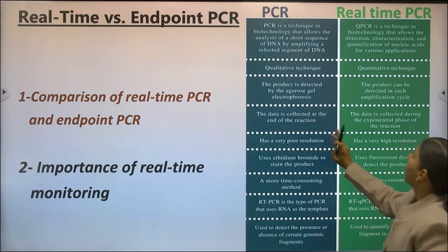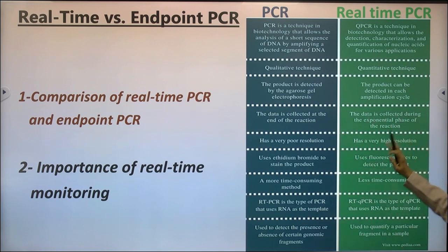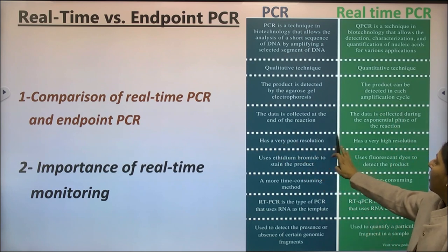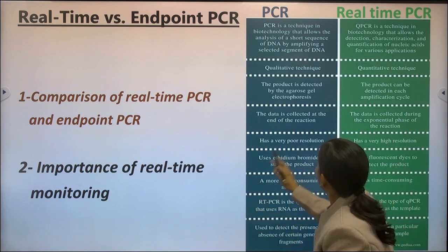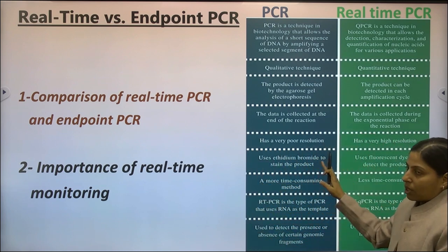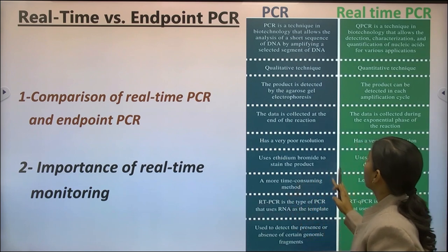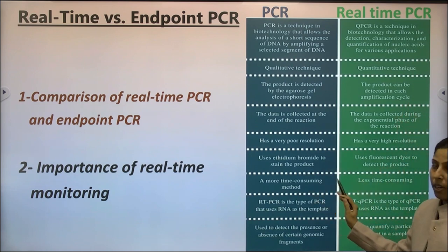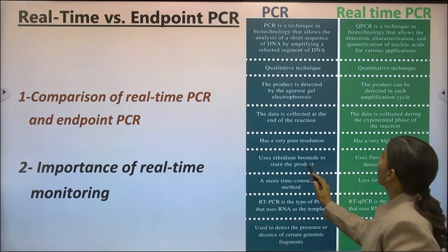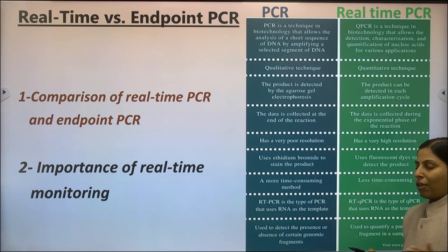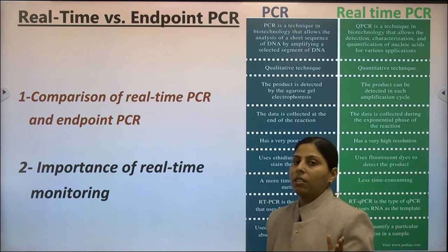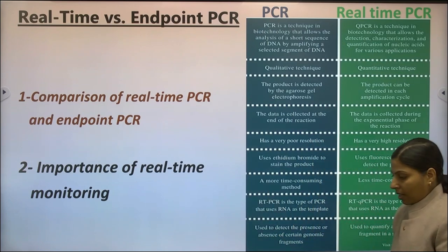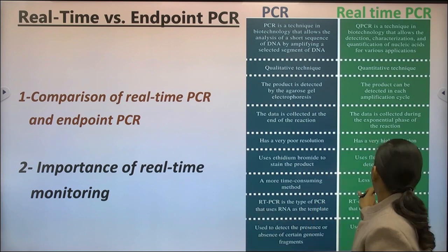In conventional PCR, data is collected at the end of the reaction, whereas in real-time PCR data is collected during the exponential phase — the growth phase of the reaction. Conventional PCR has very poor resolution compared to real-time PCR. Ethidium bromide dye is used to stain the DNA amplicons on the gel for visualization, whereas in real-time PCR we use fluorescent dyes such as TAMRA and SYBR Green. Conventional PCR is more time consuming since we have to perform the reaction and then run products on the gel.